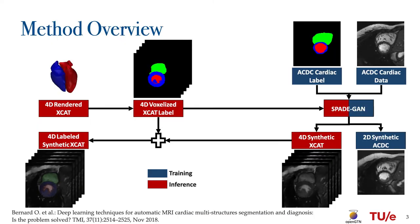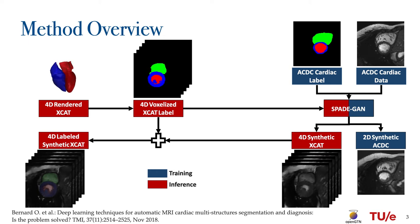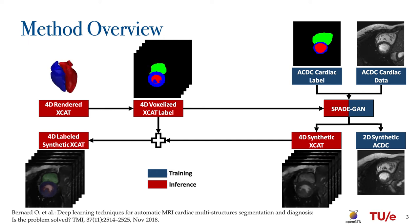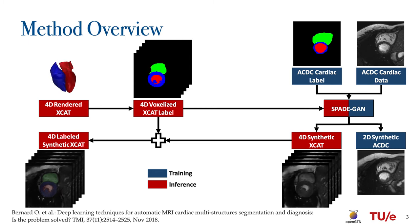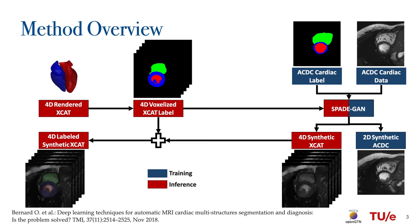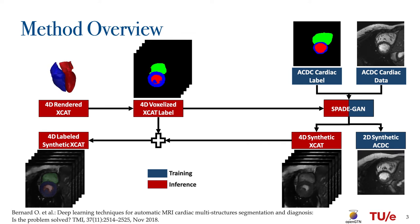Our hybrid method takes the 4D XCAT heart model as the anatomical ground truth and synthesizes cardiac MR images via generative adversarial networks. We employ the SPADE GANs which help in preserving the semantic information of the ground truth's anatomy.